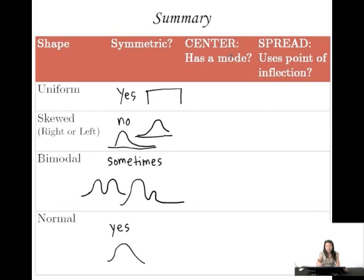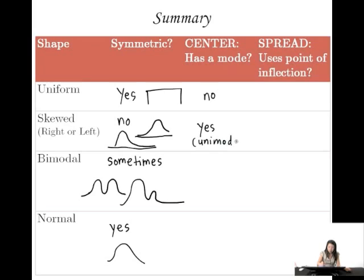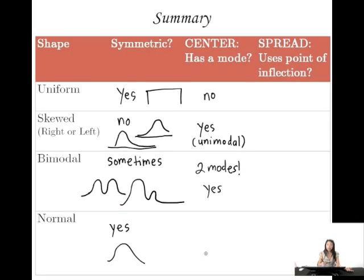Now let's talk about centers. Does a uniform distribution have a clear mode? No — all values are roughly similarly frequent. Skewed distributions are typically unimodal, so yes. Bimodal distributions have two modes — in fact, sometimes more; you could have trimodal. Normal distributions, of course, have a mode because they are also unimodal.